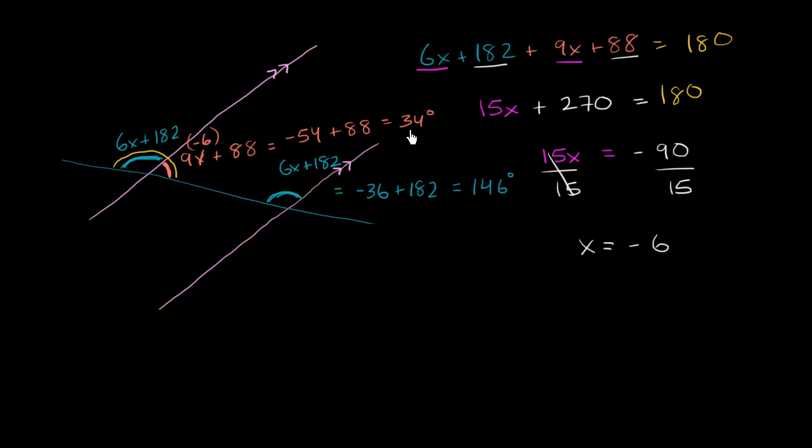And you can verify, 146 plus 34 is equal to 180 degrees. 146 plus 34 is equal to 180 degrees.